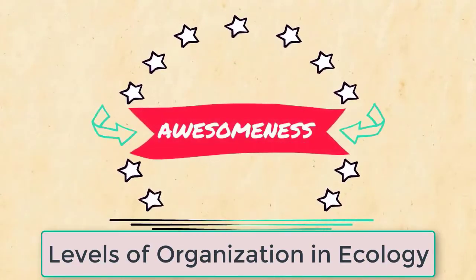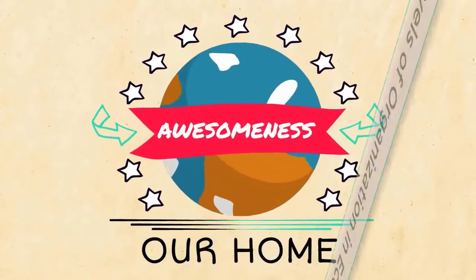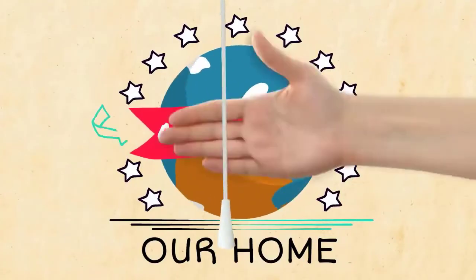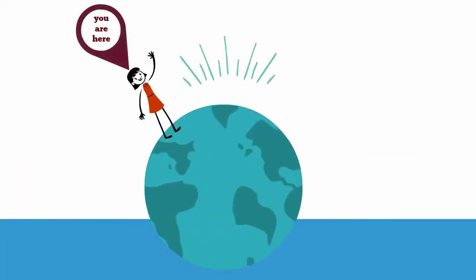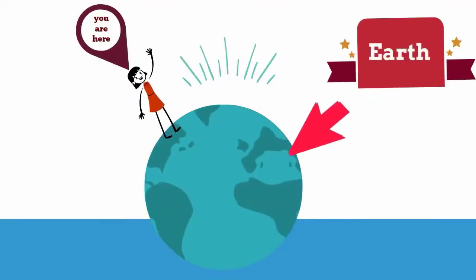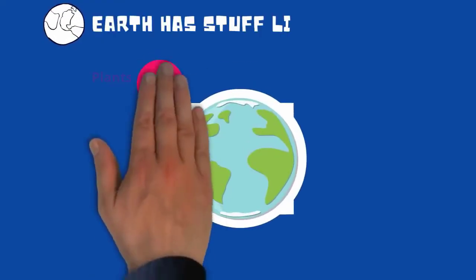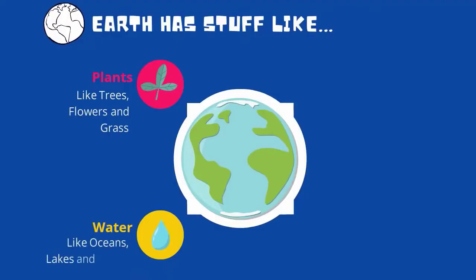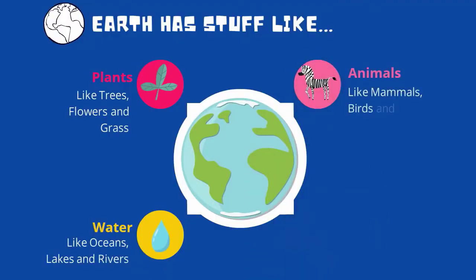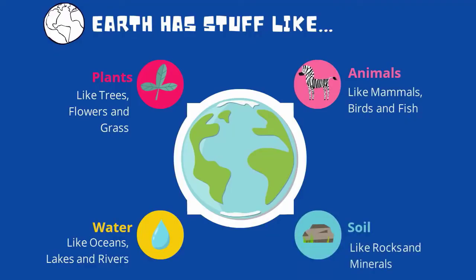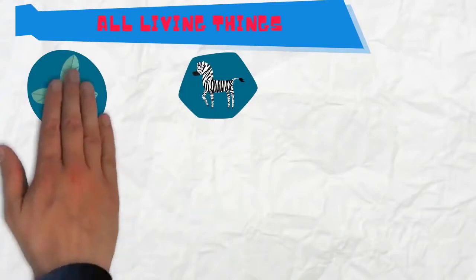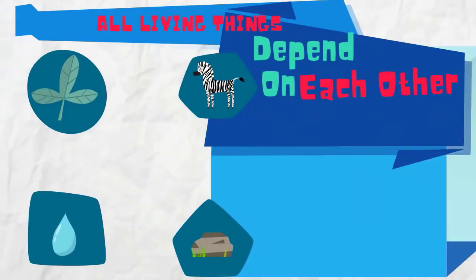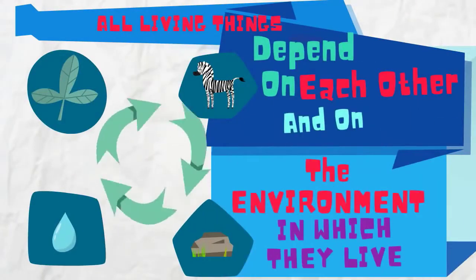Levels of Organization in Ecology. In ecology, we seek to understand the interactions among organisms and their environment. This includes both biotic and abiotic components. Some of these factors include plants like trees, flowers, and grass; water like oceans, lakes, and rivers; animals like mammals, birds, and fish; and soil like rocks and minerals. All living things depend upon one another, and they depend upon the environment in which they live for their survival.